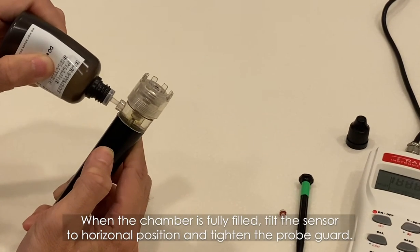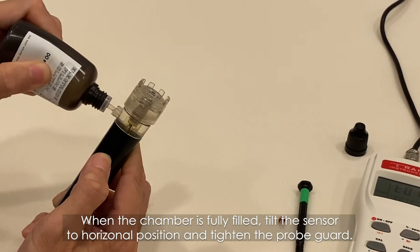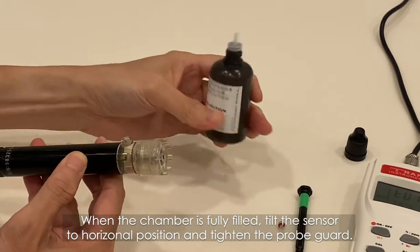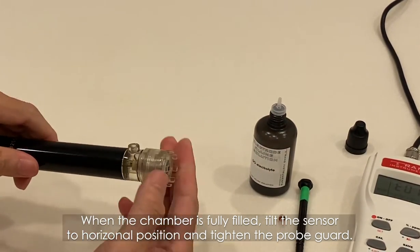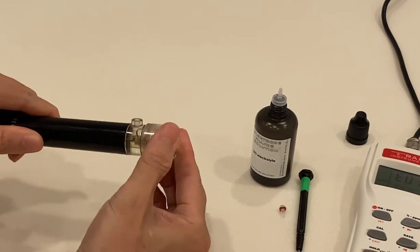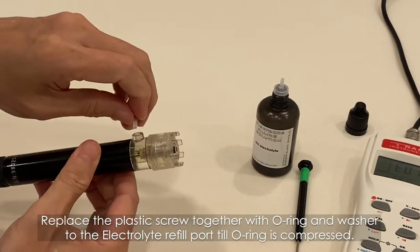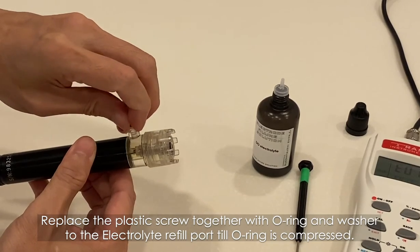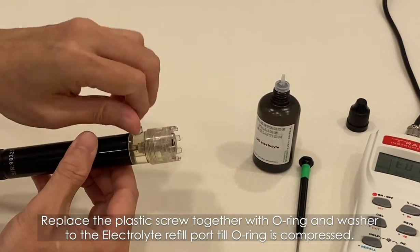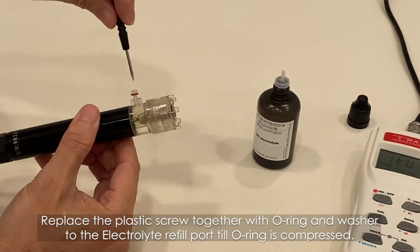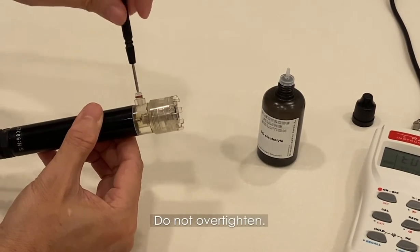When the chamber is fully filled, tilt the sensor to horizontal position and tighten the probe guard. Replace the plastic screw together with O-ring and washer to the electrolyte refill pothole till O-ring is compressed. Do not over-tighten.